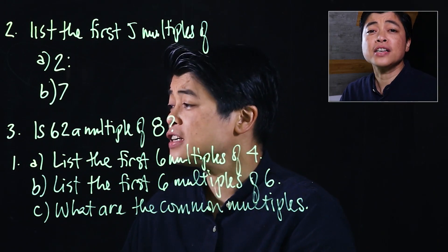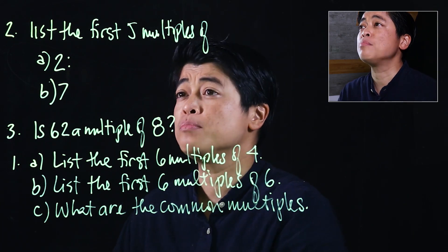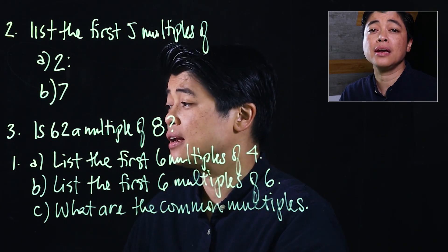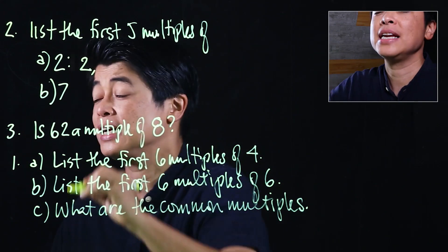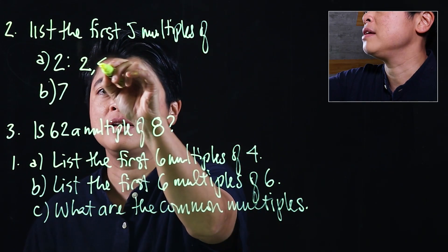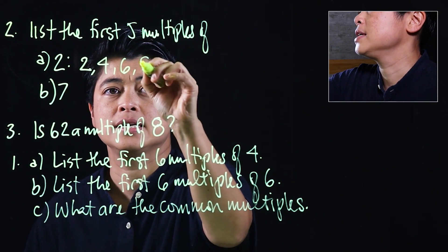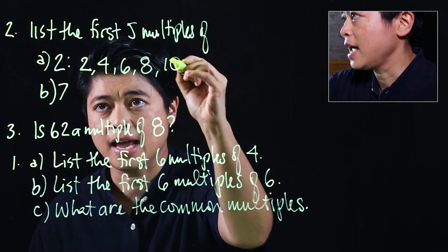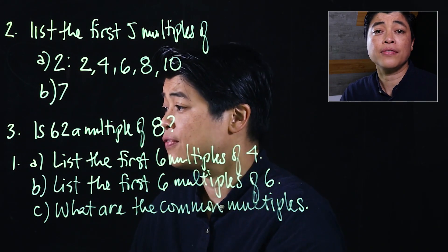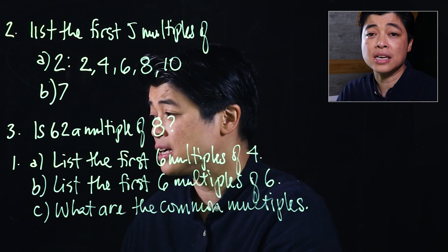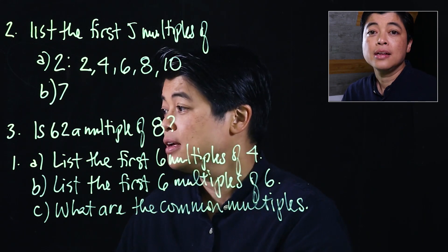The first problem says: list the first five multiples of two. If we follow the book, the first multiple of two is two itself, so that would be 2, 4, 6, 8, and 10. But if the school teaches that zero is the first multiple, then it would be 0, 2, 4, 6, and 8. The program will follow the book.